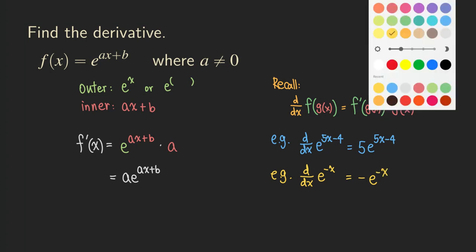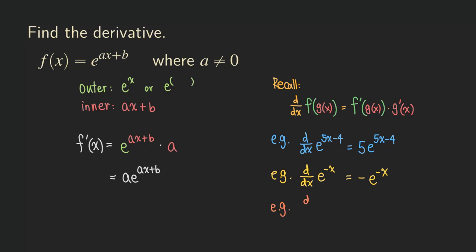Let's try one more. If we have e to the 7 plus 3x, the order is changed but a is still the coefficient of x, which is 3. So the derivative is 3 times e to the 7 plus 3x. Whatever number is in front of the x, you put it as the coefficient of the exponential function, and that is the derivative.